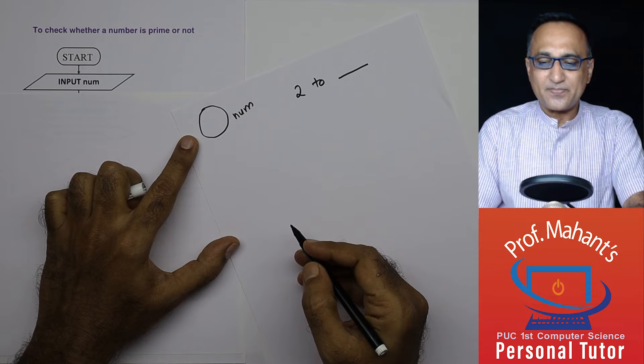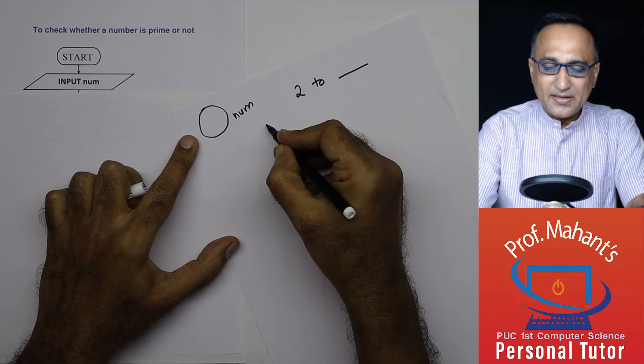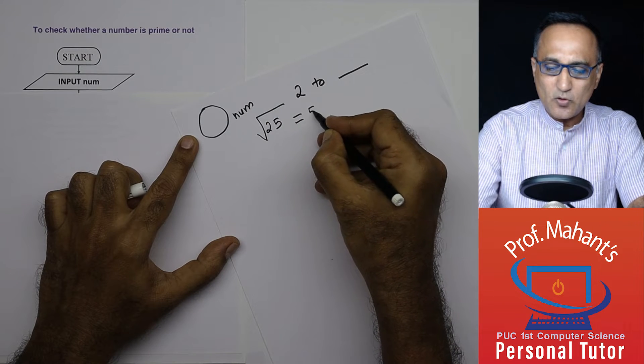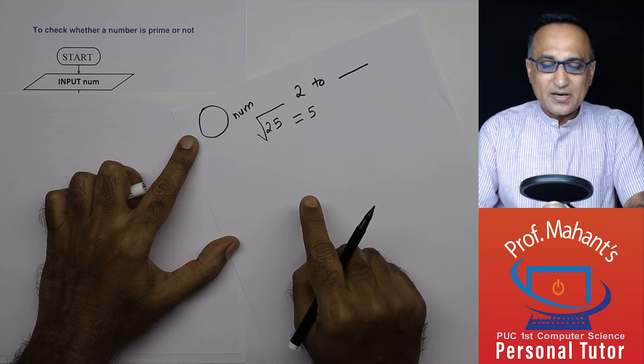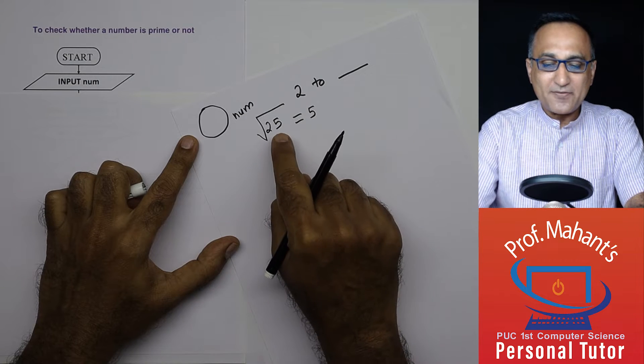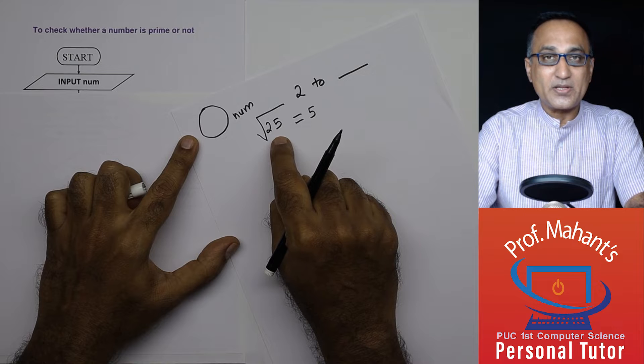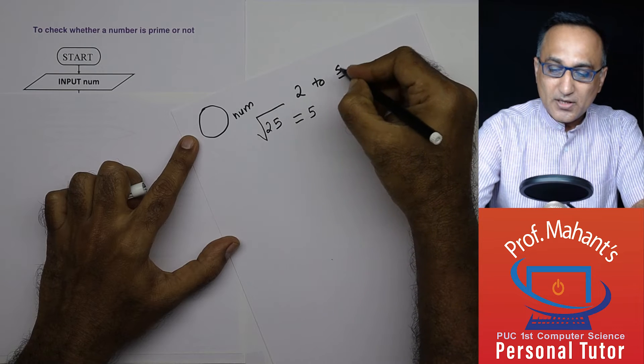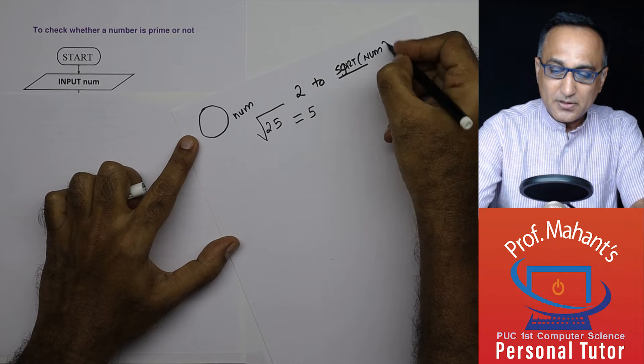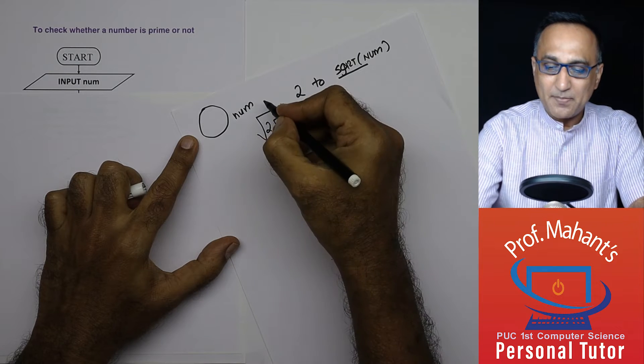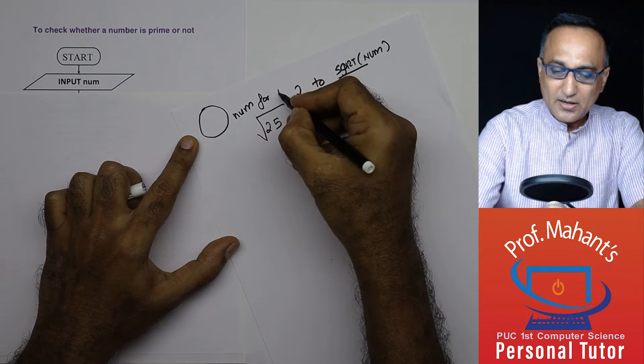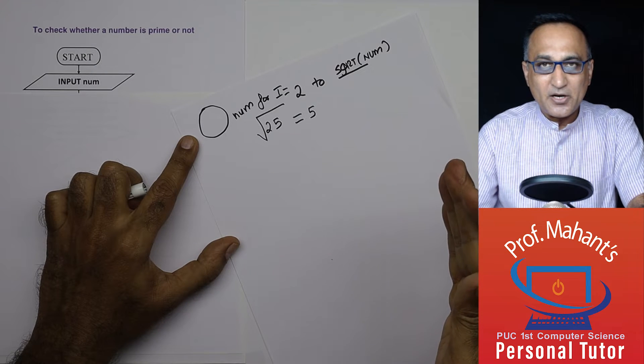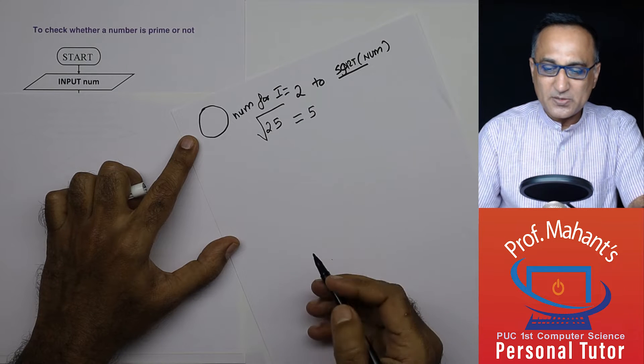Let me tell you what this is. Suppose I got a number like 25. What is the square root of 25? It is equal to 5. The last number I should check whether 25 is divisible to find out whether it's a prime number or not should be 5. So starting from 2 to the square root of that number, I shall increase this one at a time.